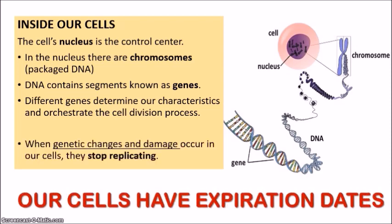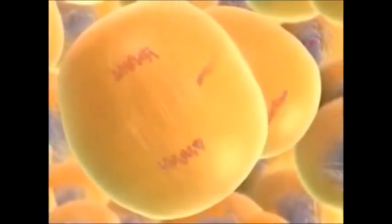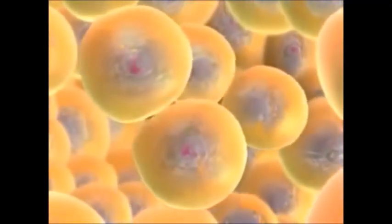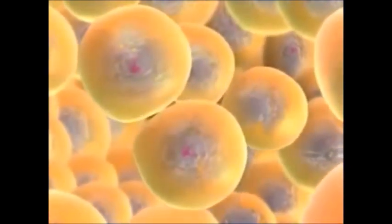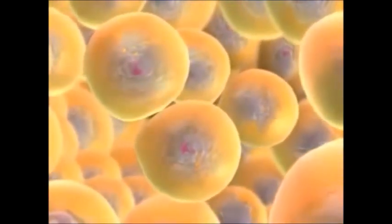When genetic changes and damage occur in our cells, they can actually cause the cells to stop replicating. Therefore our cells actually have expiration dates. Naturally, cells would usually divide in order to multiply and make more of them. Through the process of mitosis, human cells divide for growth and repair of all the tissues in our bodies. But as time goes by, the cell division process starts to slow down and eventually stops because of various genetic reasons, which I will look at shortly.